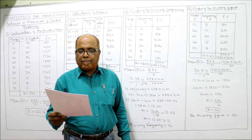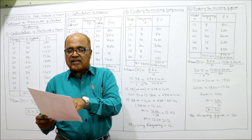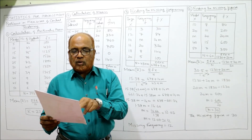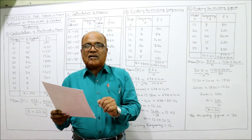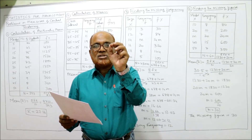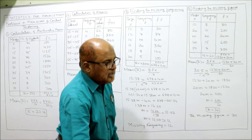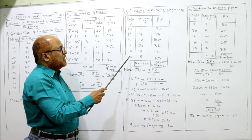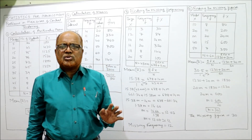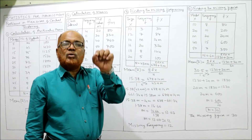In this problem, one frequency is missing and the mean value of 15.38 is given. Sizes are 10, 12, 14, 16, 18, 20 — we denote size as X and frequency as F. Frequencies given are: 3 for size 10, 7 for size 12, and a question mark for size 14 — that is the missing frequency. We denote the missing frequency as M (any alphabet can be used) and we need to find the value of M.